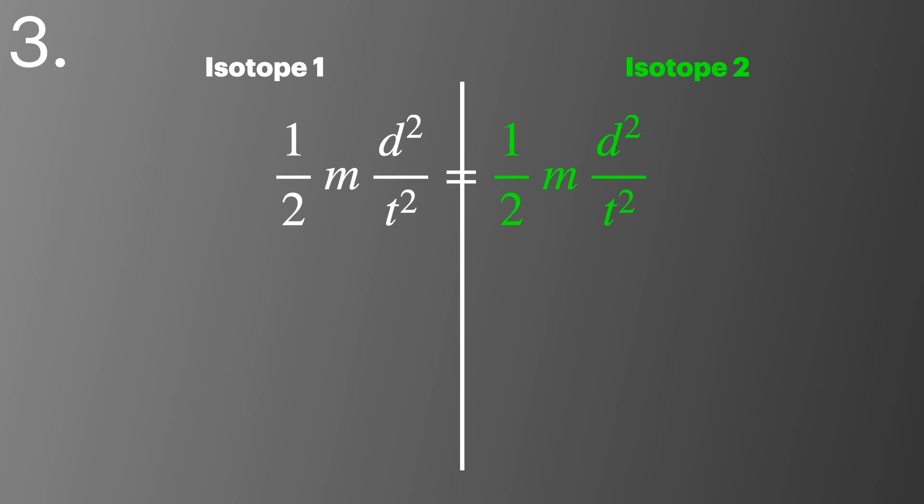The distance and the 1 over 2 appear on both sides of the equation. These are now shown in blue. We can cancel these terms to simplify our calculation. This leaves us with the mass of ion 1 divided by the time taken for ion 1 squared, equals the mass of ion 2 divided by the time taken for ion 2 squared. I've made them different colors here to make sure it's simple to see that they are different values.